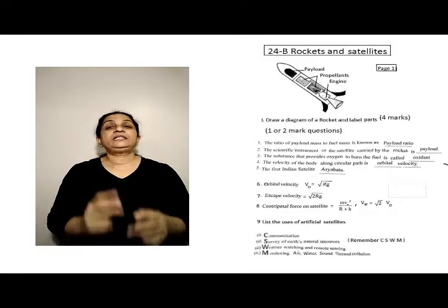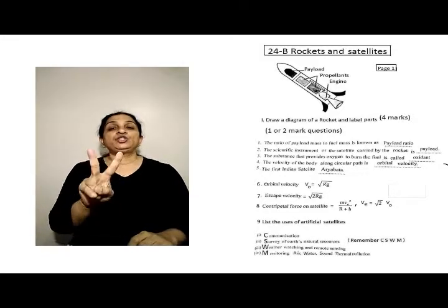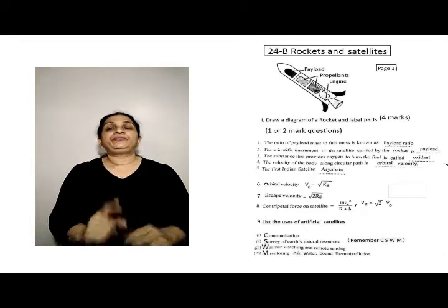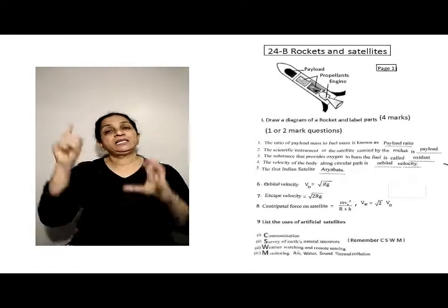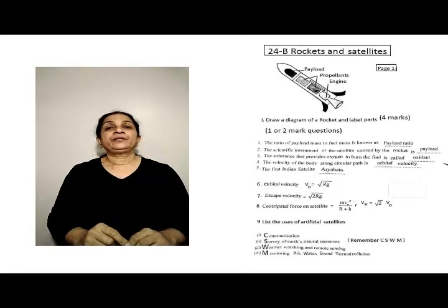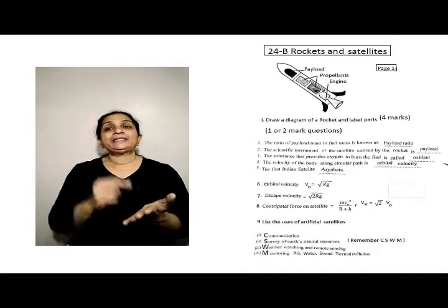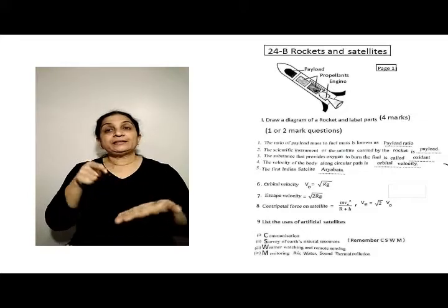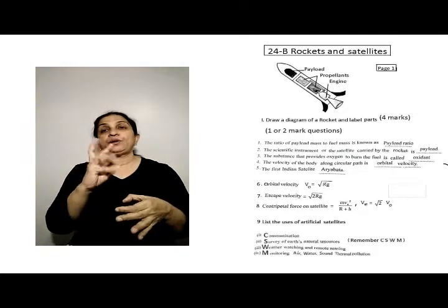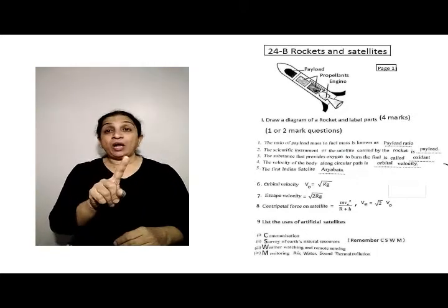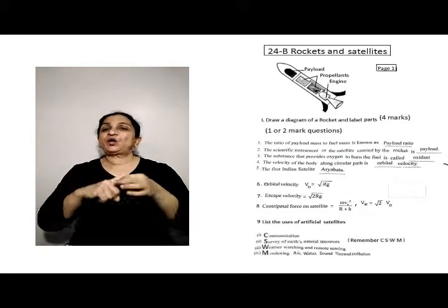Now we will see the topic 24B that is Rockets and Satellites. First draw a diagram of a rocket and label the parts. This question is for six marks. Then you have one or two marks questions.